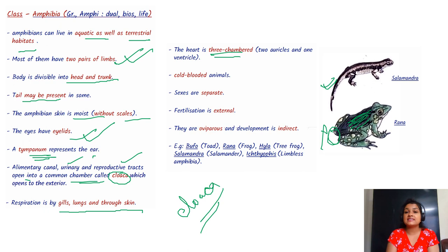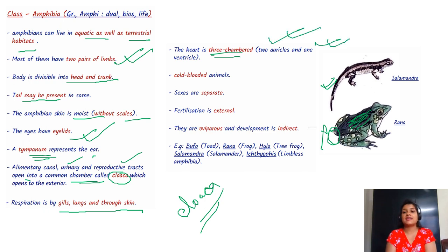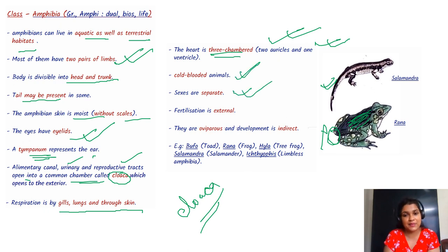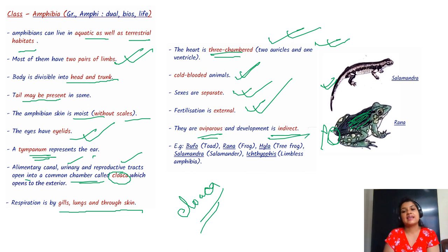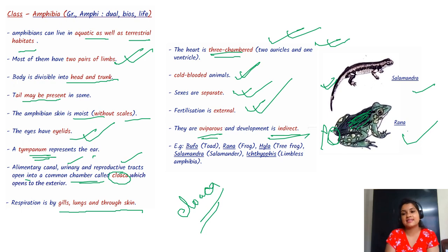Respiration is by gills, lungs, and through skin. The heart is three-chambered — two auricles and one ventricle. They are cold-blooded, sexes separate, fertilization external, oviparous, and development is indirect. Examples: Salamander and Rana (frog).